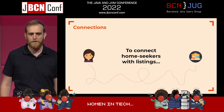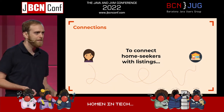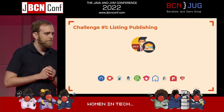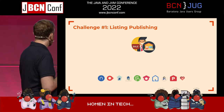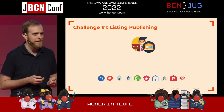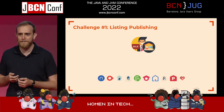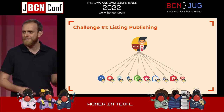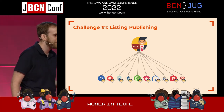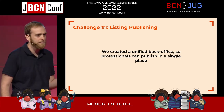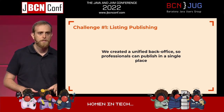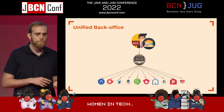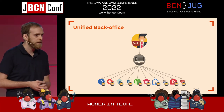To connect home seekers with the listings, what they should do is connect them with the owners. Since we got plenty of portals and brands, you'd think this person publishes their listing everywhere — but that seems like hard, manual work. So what we actually did is create a unified back office, so a professional can publish their listing in just a single place, and this listing gets automatically propagated to all the sites.